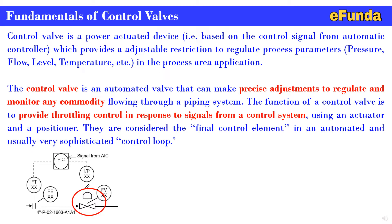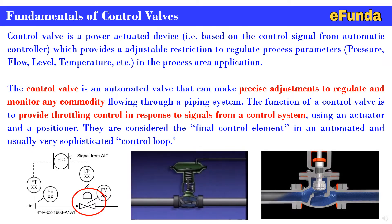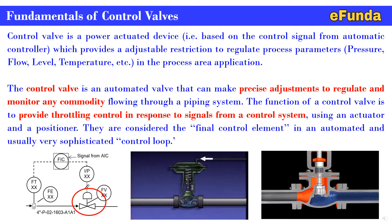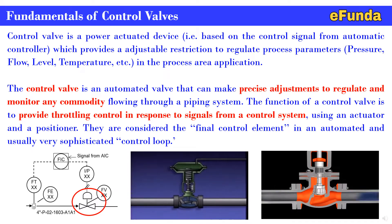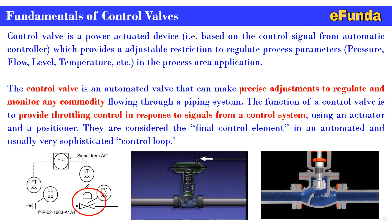The control valve is an automated valve that can make precise adjustments to regulate and monitor any commodity flowing through a piping system. One can refer to the animations where control valve functionality is shown for better understanding. The function of a control valve is to provide throttling control in response to the signal from a control system, using an actuator and a positioner. They are also considered the final control element in an automated and usually sophisticated control loop.